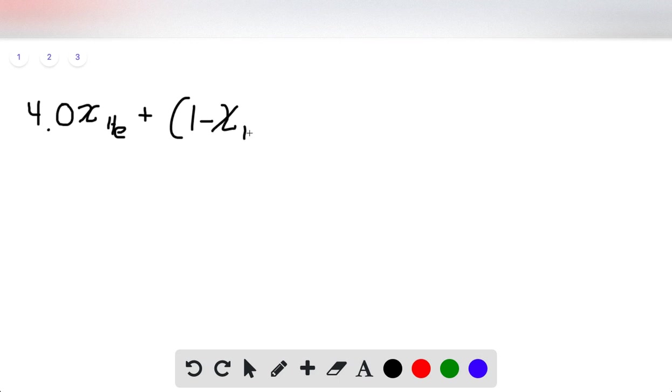plus 1 minus the mole fraction of helium, times the molar mass of argon, which is 39.948, and that equals 16.49.